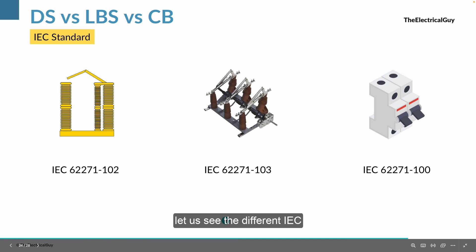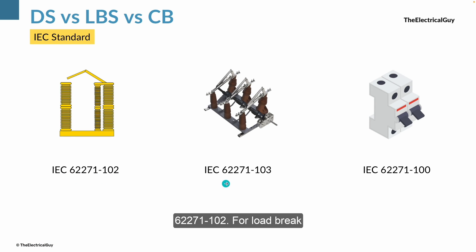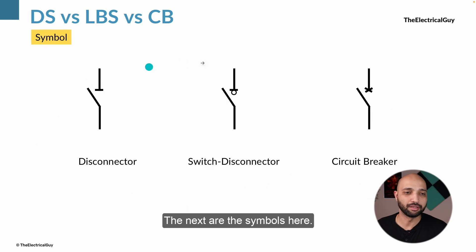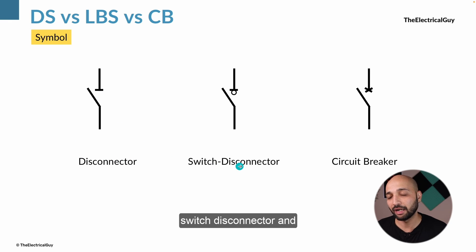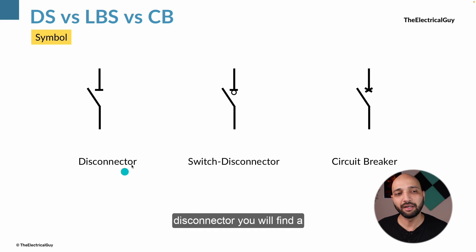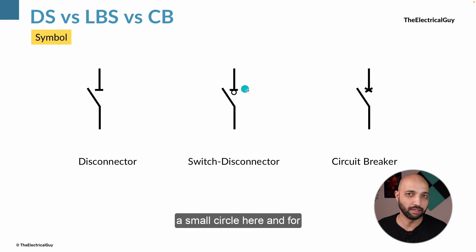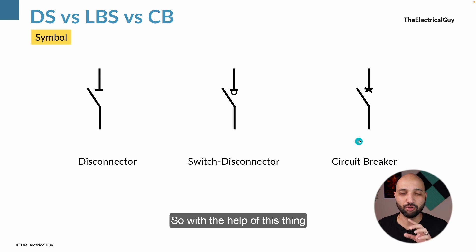Looking at the IEC standards: for disconnector it is IEC 62271-102, for load break switch or switch disconnector it is 103, and for circuit breaker it is 100. Regarding symbols: for disconnector there is a horizontal line; for switch disconnector there is a horizontal line with a small circle; and for circuit breaker there is a cross mark. These visual cues help you remember the symbols for each device.